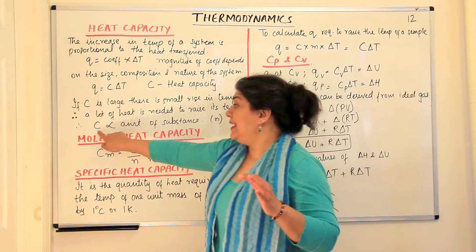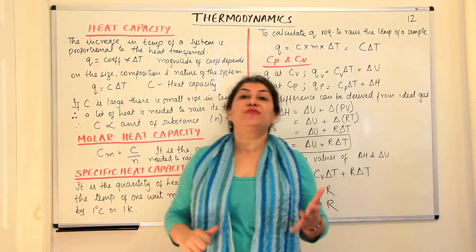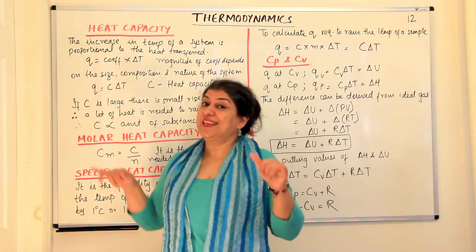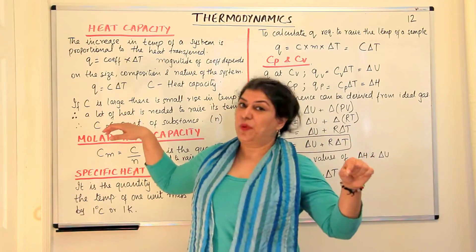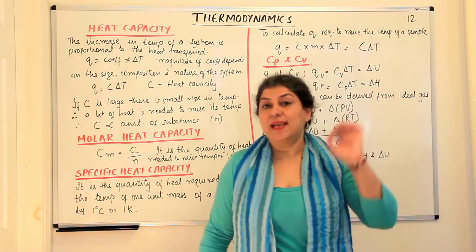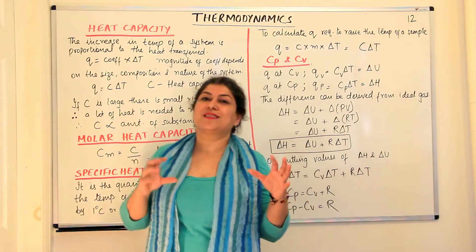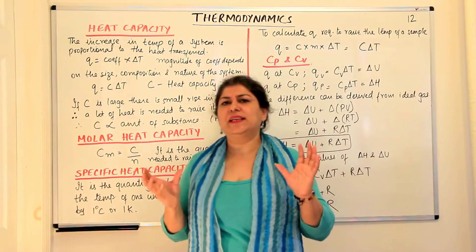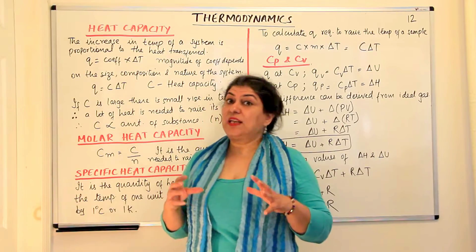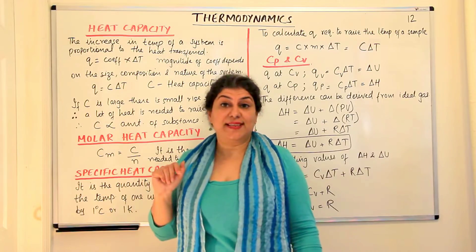C is also proportional to the amount of substance — it depends on the number of moles and the mass of the substance taken. Heat capacity is an extensive property because it depends on the amount of substance taken. Water has a very high heat capacity, which means you have to provide a lot of heat to increase its temperature by even one degree Celsius.